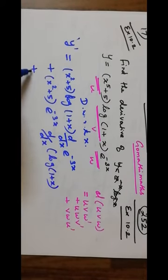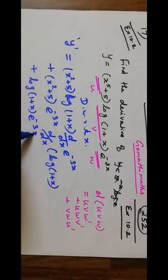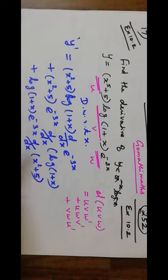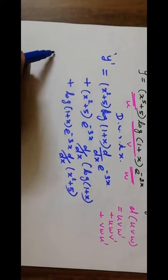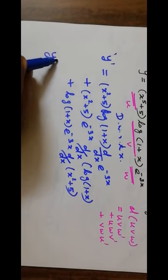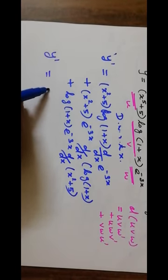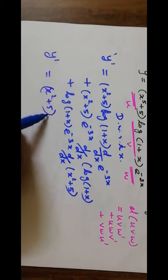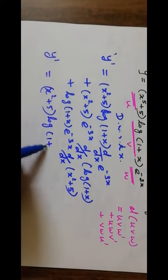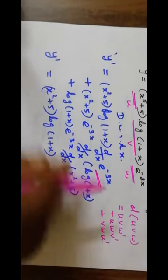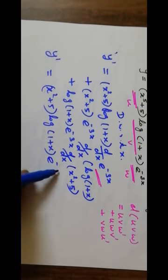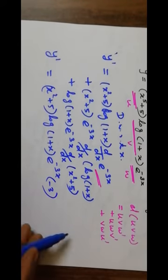Then next, plus e power minus 3x, D by dx of log of 1 plus x. Then plus log of 1 plus x, write as it is, then e power minus 3x, write as it is. D by dx of x squared plus 5. Any one you are differentiating and keep the other two as usual.